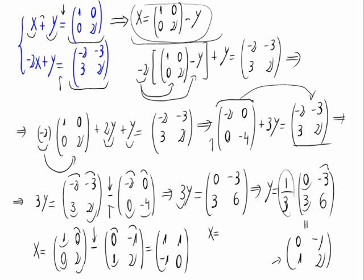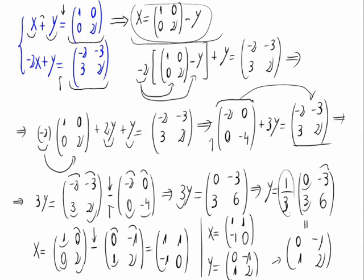So we have only one possible solution for x, and only one for y. x is the matrix we have right here, and y is 0, minus 1, 1, 2. We've completely solved the system of equations given.